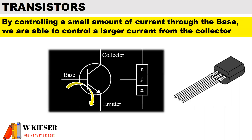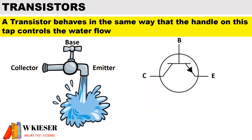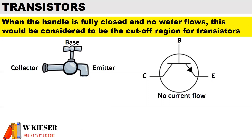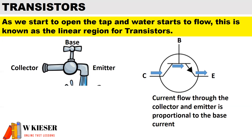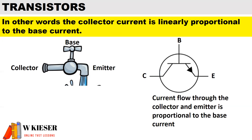By controlling a small amount of current through the base, we are able to control a larger current from the collector. A transistor behaves in the same way that the handle on a tap controls water flow. When the handle is fully closed and no water flows, this would be considered the cutoff region. As we start to open the tap and water starts to flow, this is known as the linear region. Current flow through the collector and emitter is proportional to the base current — in other words, the collector current is linearly proportional to the base current.